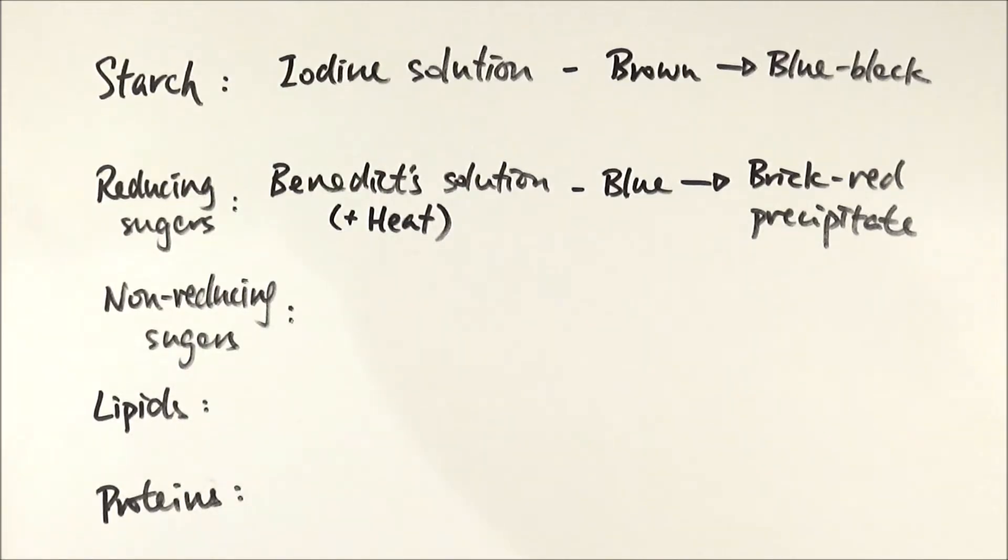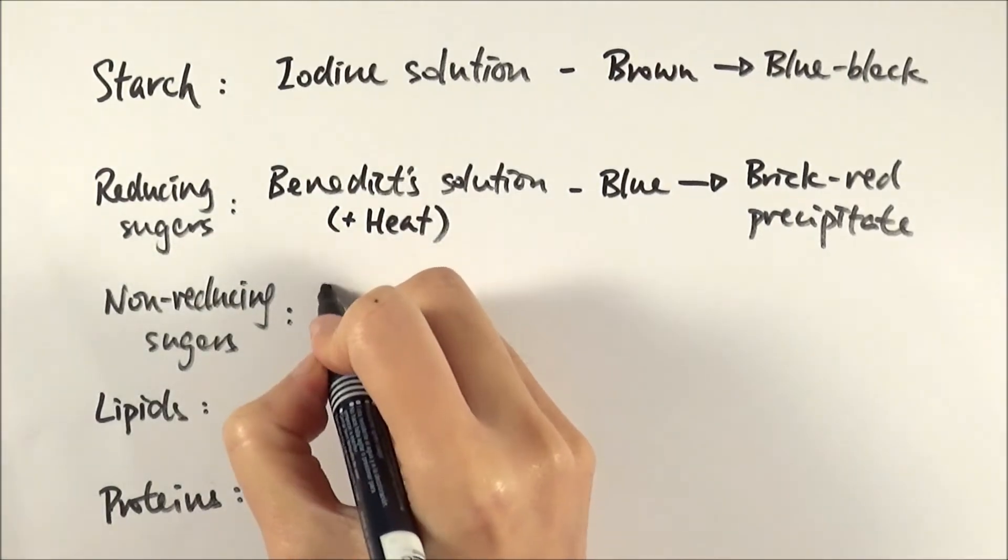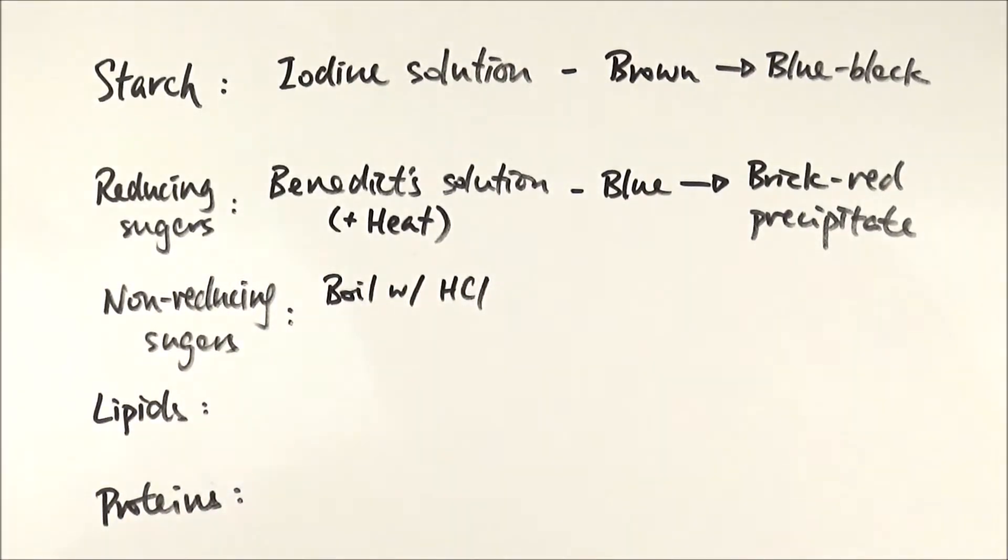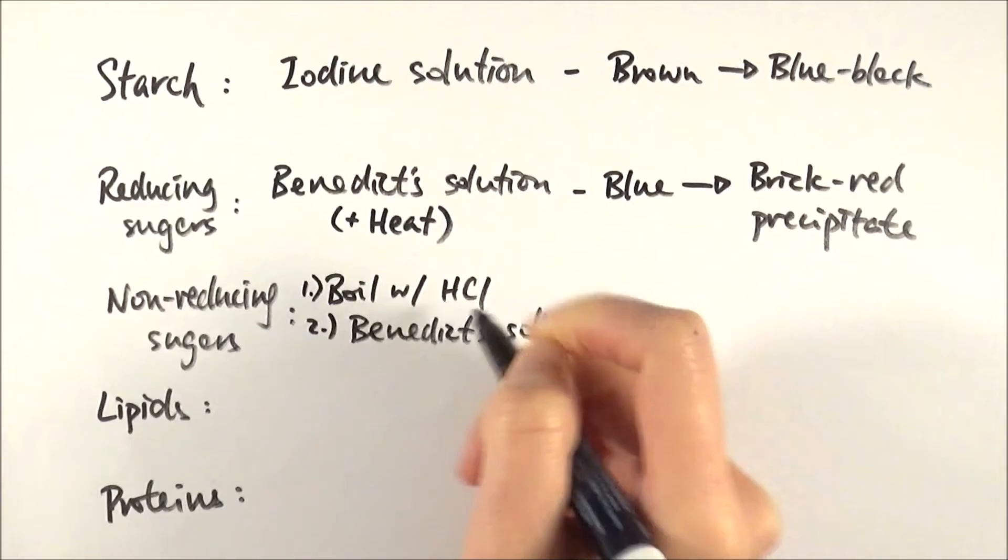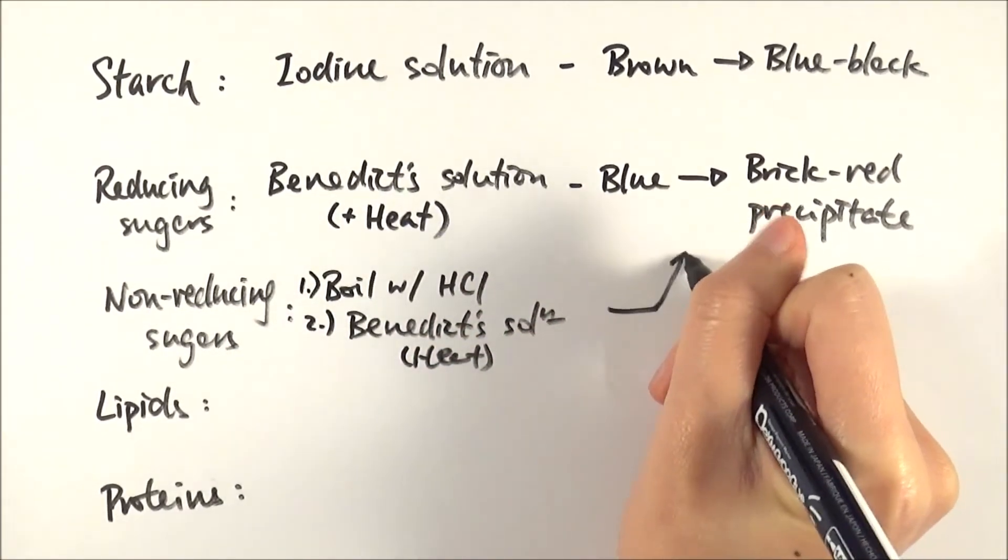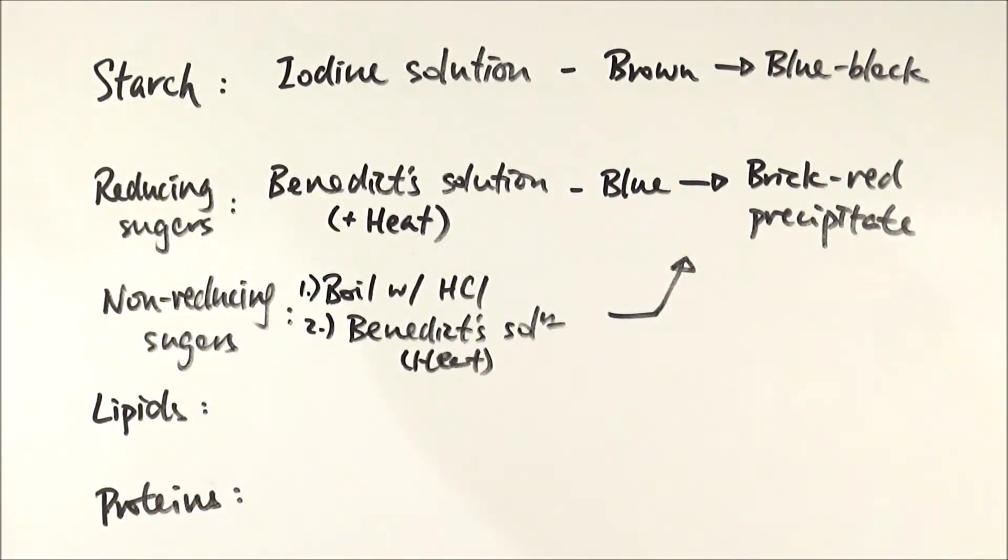Non-reducing sugars—a common example would be sucrose. If you mix non-reducing sugars with Benedict's solution and heat it, you won't get any results. But what we can do is first boil it with hydrochloric acid, and the hydrochloric acid will hydrolyze the sucrose to glucose and fructose, which are reducing sugars. The idea is to change the non-reducing sugar back to reducing sugar. Then after that, you do the Benedict's test again and heat it, and you get the same results where blue turns red.